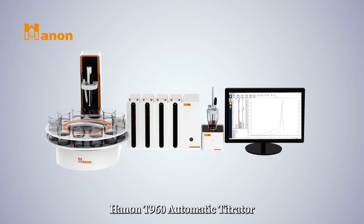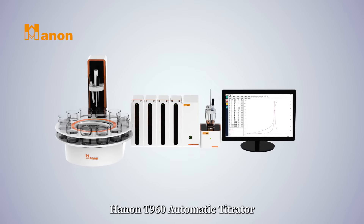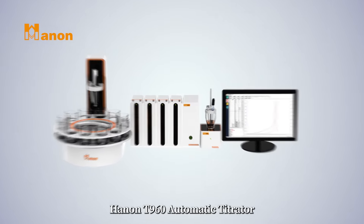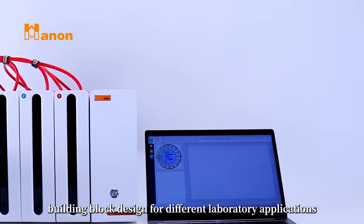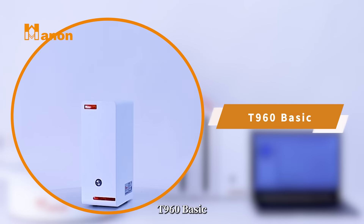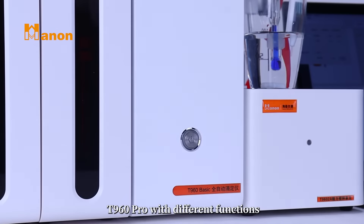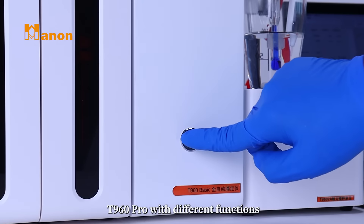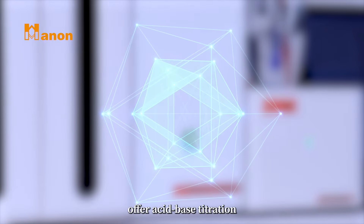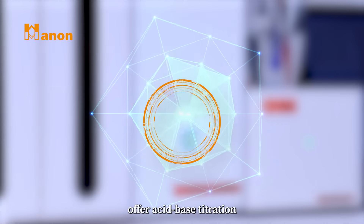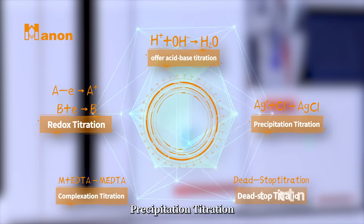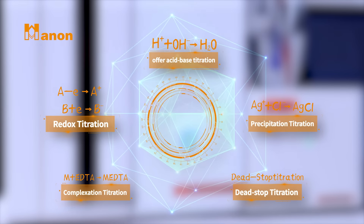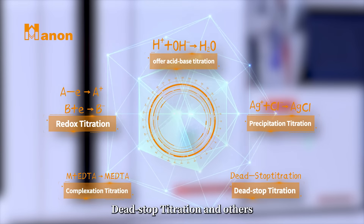The Hainan T960 fully automatic titrator features a building block design for different laboratory applications. The T960 Basic and T960 Pro offer different functions, including acid-base titration, redox titration, precipitation titration, complexation titration, dead stop titration, and more.